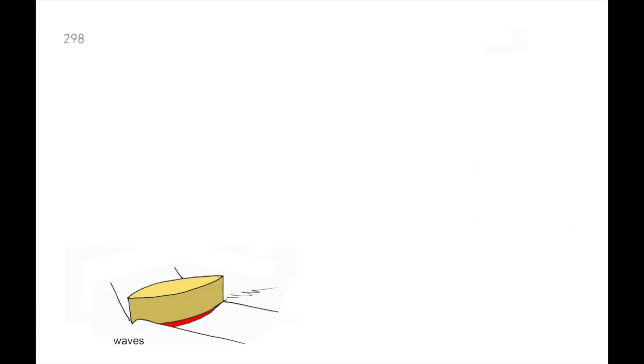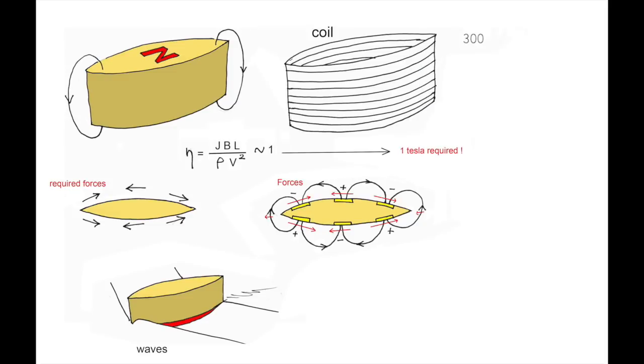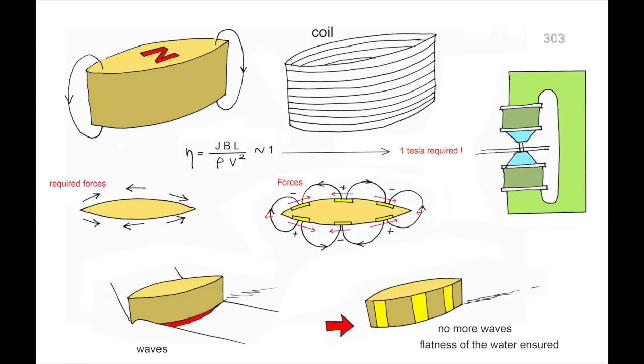Consider the hull of the ship. To control the flow, the following force field was required. I thought first about a pyramidal magnet or a coil. But it was necessary to have an interaction parameter high enough. With the current density limited to one ampere per square centimeter to avoid electrolysis, a one Tesla field was required. So I shifted for this device. Immediately the waves disappeared, the flatness of the water was ensured along the hull.